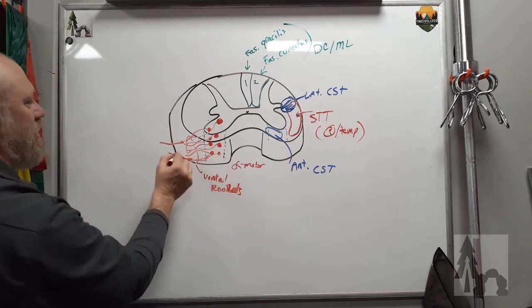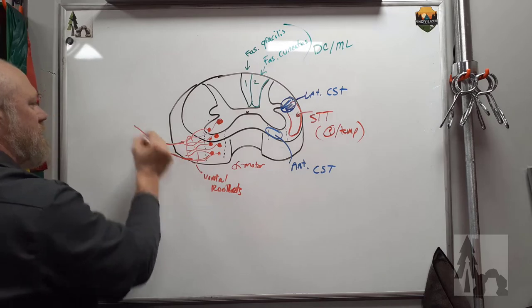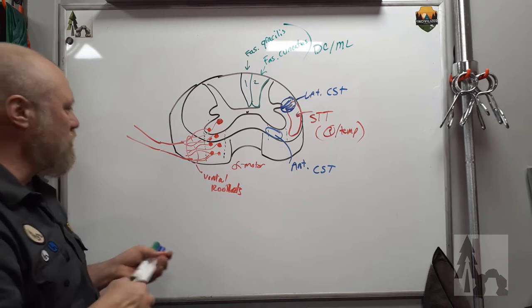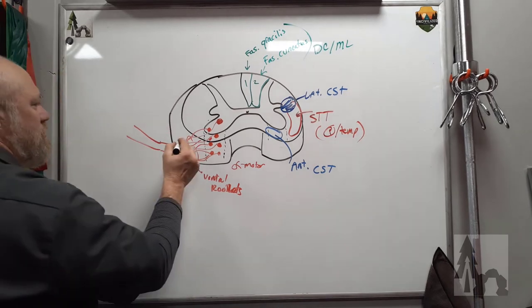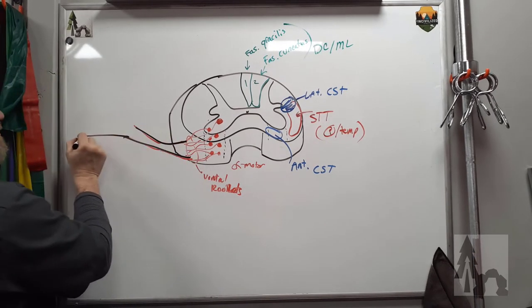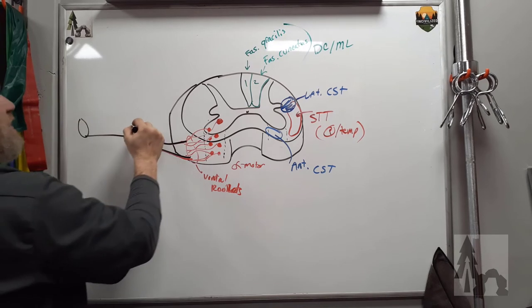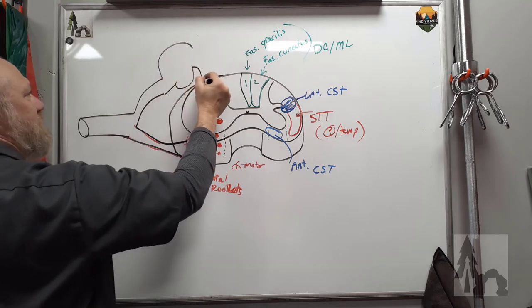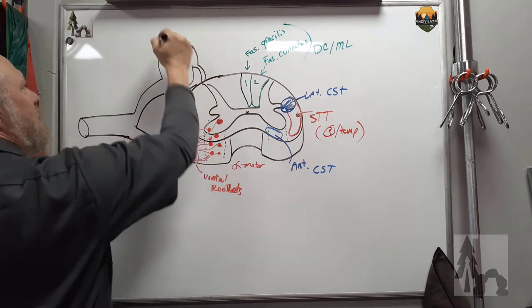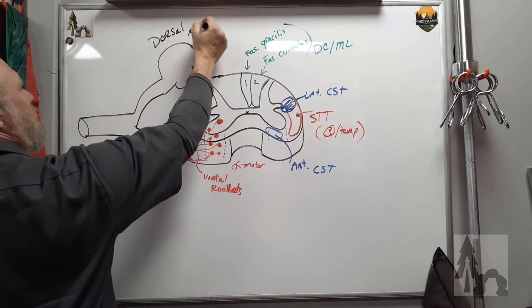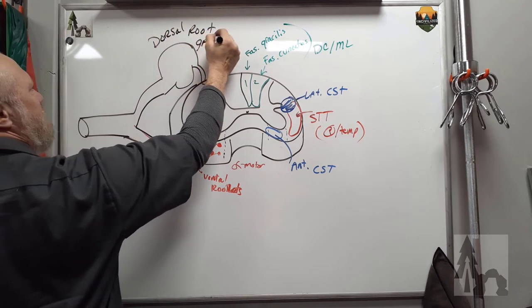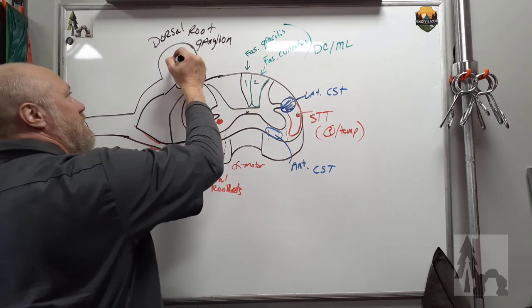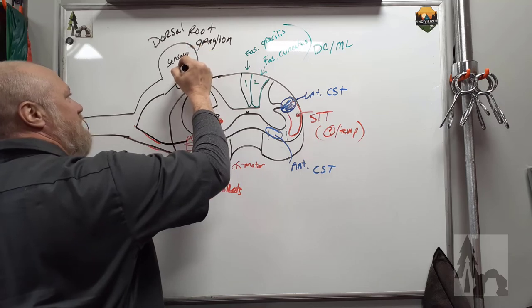The rootlets are going to join or coalesce, converge into a root, a ventral root, and the ventral root is going to join the dorsal root. So they're going to kind of come together into a ventral root and it's going to join with a dorsal root, which has this large swelling in it before it enters the spinal cord. This large swelling is called the dorsal root ganglion, ganglion being a collection of gray matter. This is where sensory cell bodies are going to live. Sensory cell bodies are going to live back here.